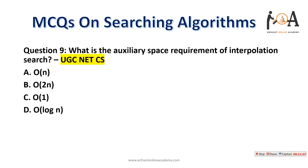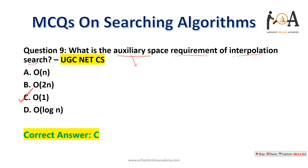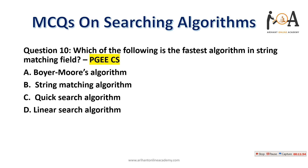Question nine: what is the auxiliary space requirement of interpolation search? The auxiliary space is O(1) because interpolation search does not require any additional space. O(1) is the correct answer.